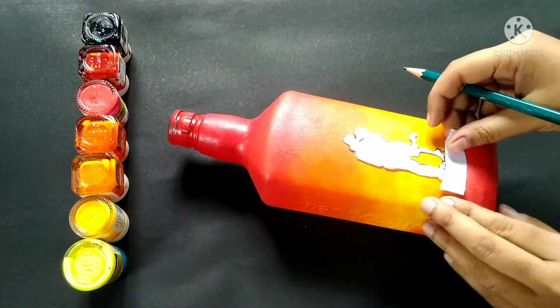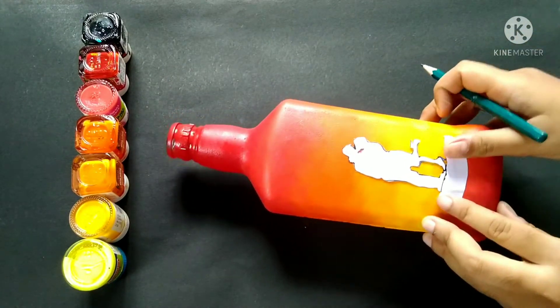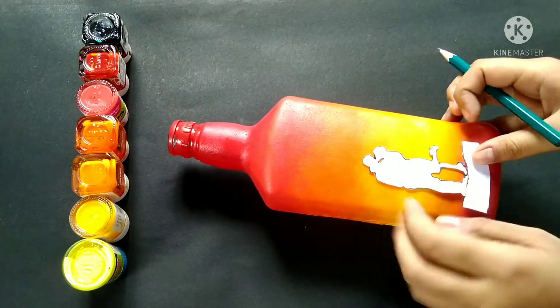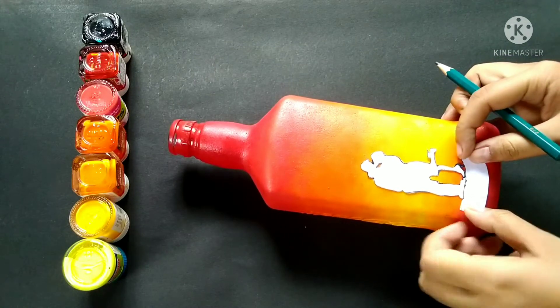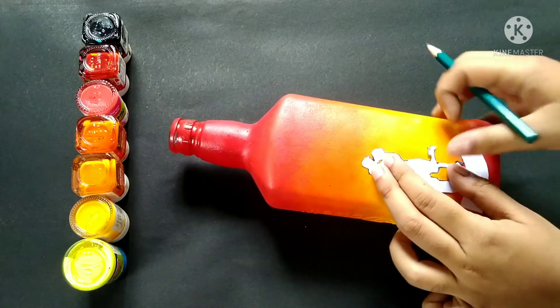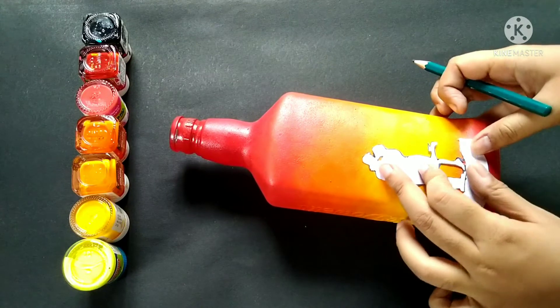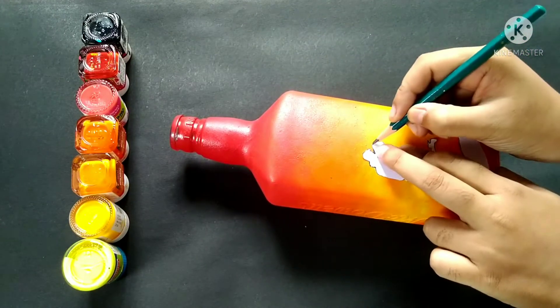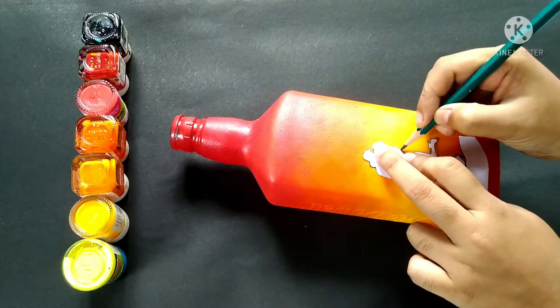The design I will do on this bottle has already been cut out on a piece of paper. If you can't draw, there's no problem. You can print it on a paper and cut it out. I have placed it and I am drawing a line around it with a pencil.